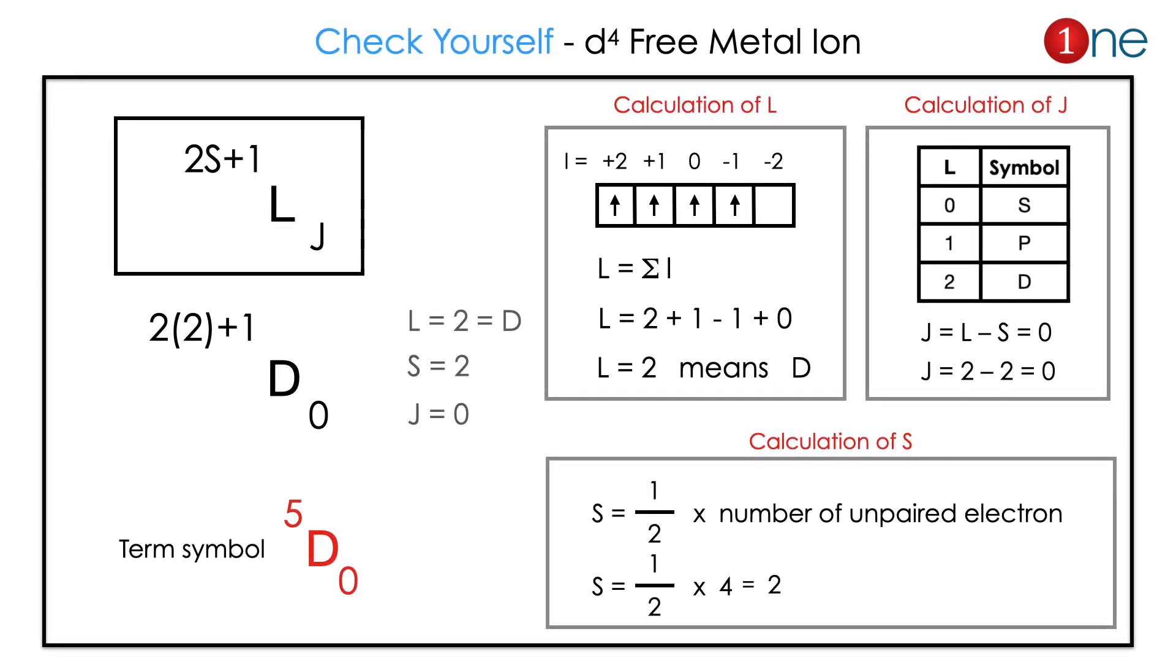Here I give an example to practice yourself which is D4 system. Let us first calculate the L there. We will fill in the orbital. You have 4 unpaired electrons. If you calculate the L, the total will be plus 2, plus 1, plus 1, minus 1, so L will be 2. L equals 2 means it's D there.